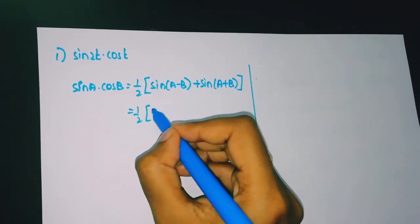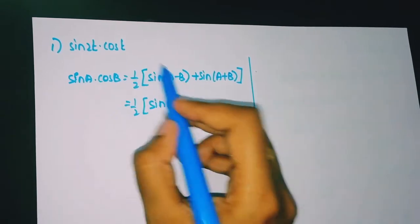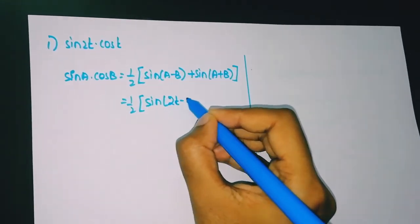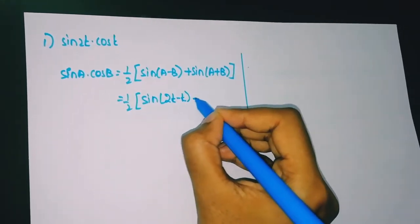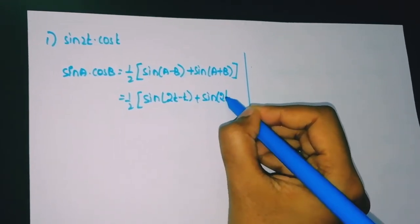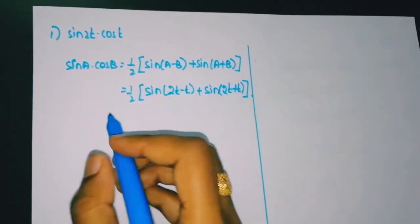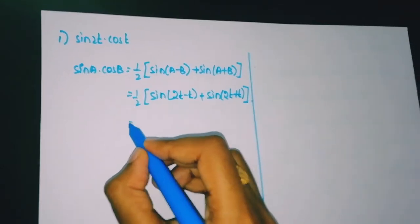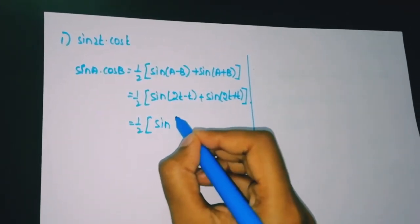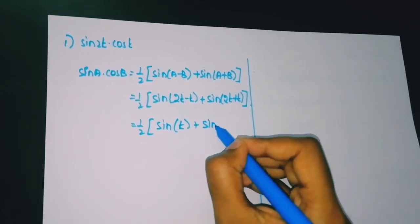So with a = 2t and b = t: (1/2)·[sin(2t − t) + sin(2t + t)], that is (1/2)·[sin(t) + sin(3t)].